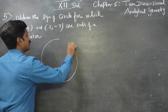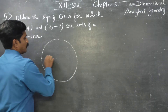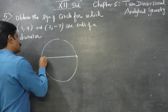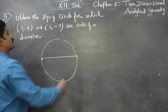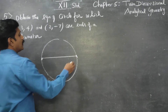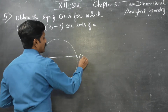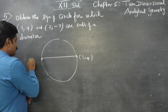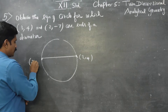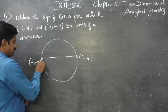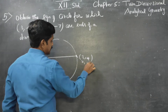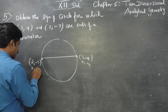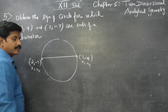A circle is given with 2 extremities of a diameter. One point is (3, 4) and the other is (2, -7). These can be named as x1, y1 and x2, y2 respectively.